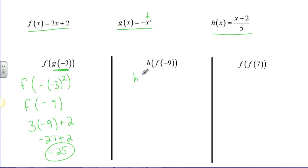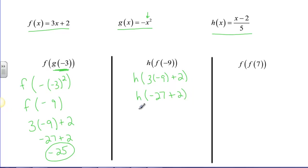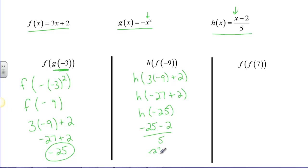Continuing with h of f of g of negative 3: we already found f of g of negative 3 equals negative 25, so now I evaluate h of negative 25. Plugging into h: negative 25 minus 2, all over 5, gives negative 27 over 5. That's my answer — I can't simplify that any further.